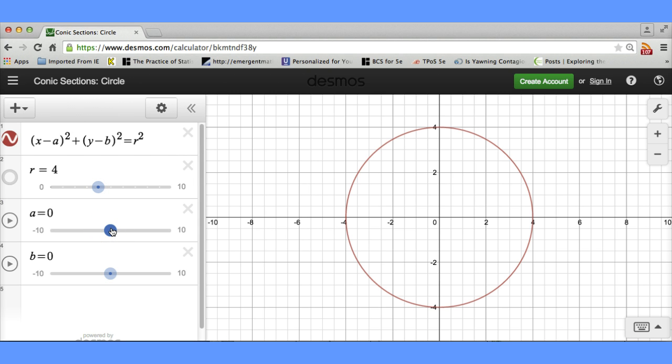let's see what happens when I change the value of A or B. Now, notice A is after the x value here in our equation. And it seems that as we change A, it moves the graph left and right, which is changing the x coordinate.